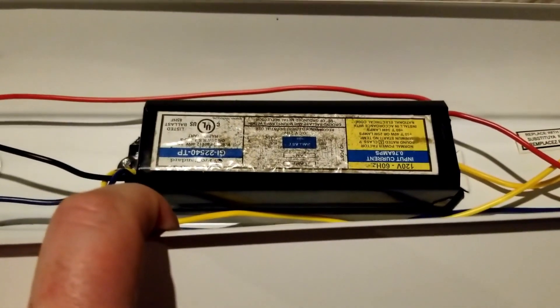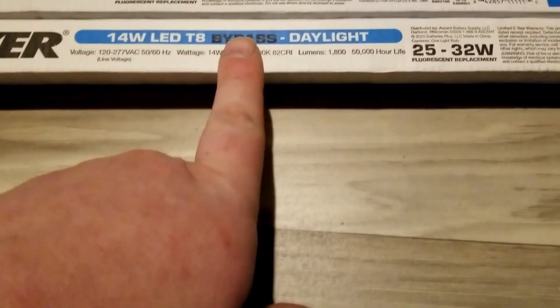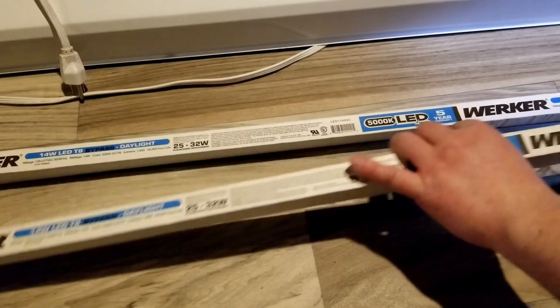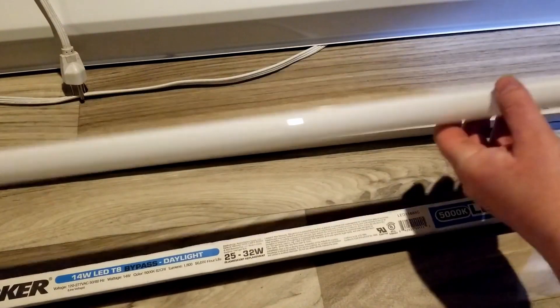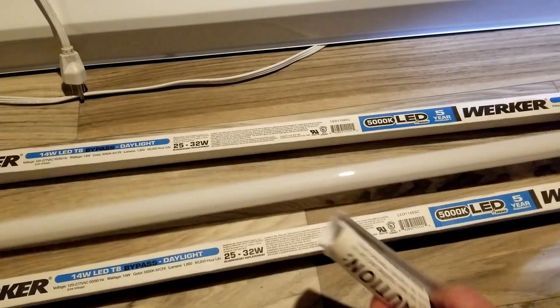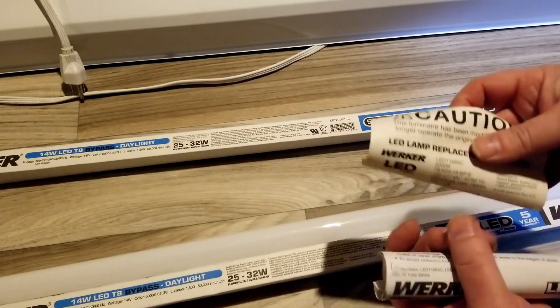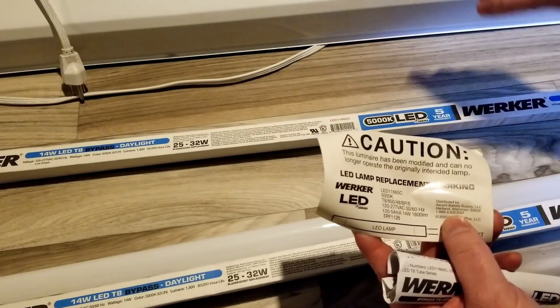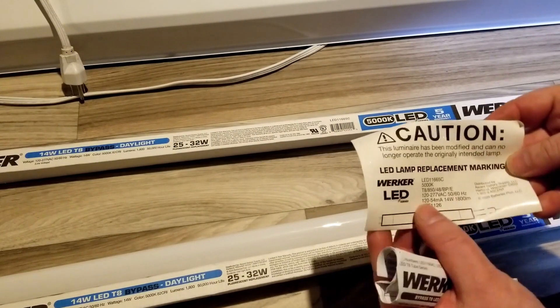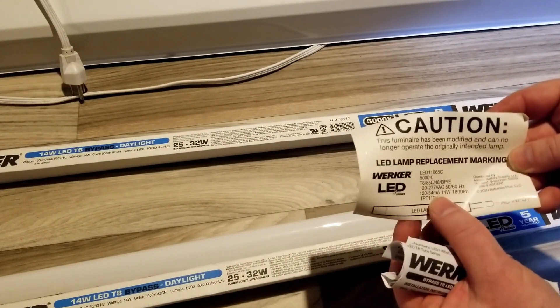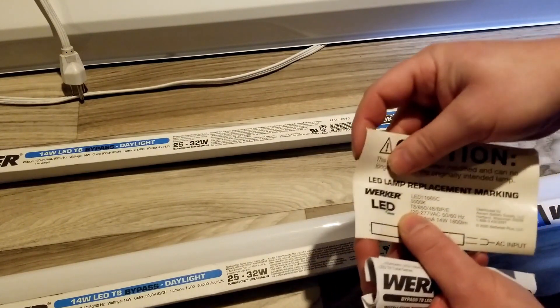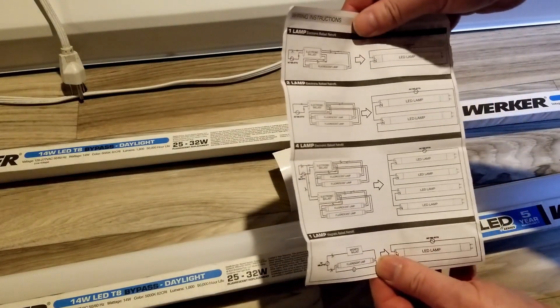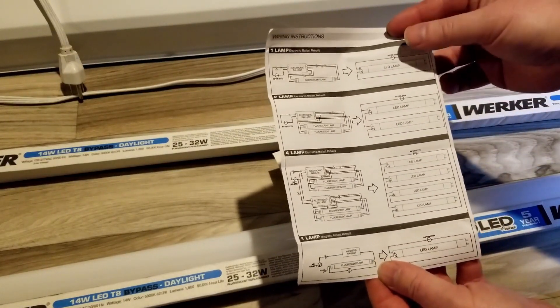But because this ballast is bad, we're getting the one that's a bypass. We're going to take that ballast out of there and run it straight to these bulbs. When we open one of these up, we get our bulb, some instructions, and a sticker. That sticker's got to go in the housing of the new one to let everybody know this has been modified for bypassing and for LEDs.